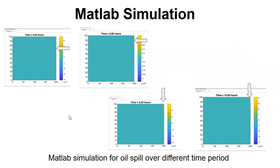This is a MATLAB simulation. As you can see, this is our 10 hours time period of MATLAB simulation of oil trajectory over time. The first is at 4 hours and 6 hours and 9 and 10 hours. The oil simulation starts around 80 to 200 at the 4 hours and it tends to move over the time period.